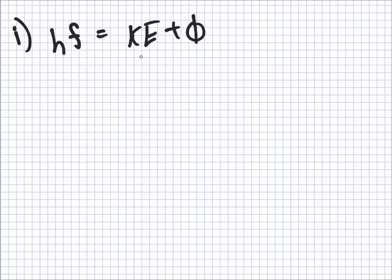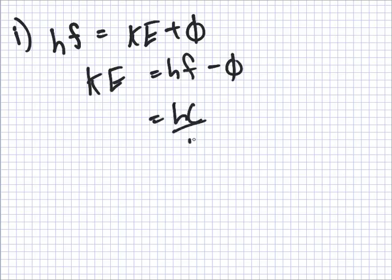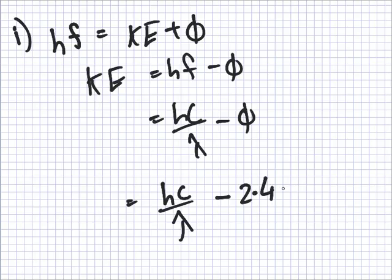And what were we looking for? The energy of the electrons, the KE. So the KE equals HF minus the work function, which is HC over lambda minus the work function, which will be HC over lambda minus 2.4E.